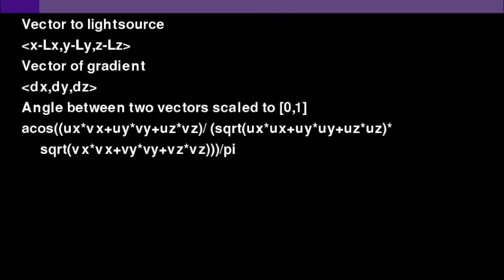So the vector to the light source at a certain point is the difference in x-coordinate, the difference in y-coordinate and the difference in z-coordinate between the light source and the point where we measure. Then there's the vector of the gradient, which is basically the normal vector to the surface. And the angle between these two vectors will be scaled from 0 to 1. From this we can determine the shade that has to be applied. And there's the function. It's basically taking two vectors u and v and then computing the angle and scaling it over pi, so it will be between 0 and 1.